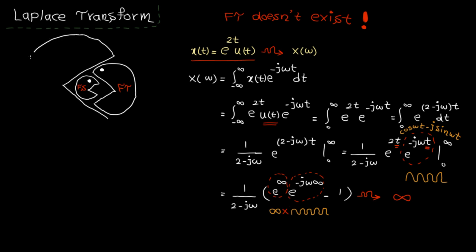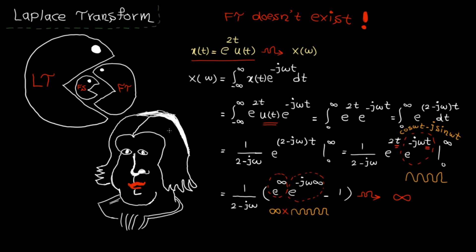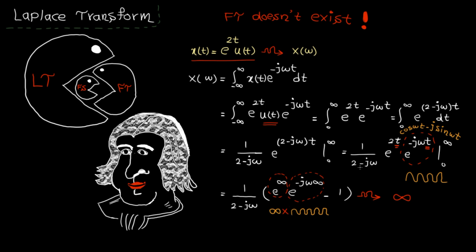So we need something bigger than Fourier transform. This huge monster is called the Laplace transform — the master of all transforms. Laplace is remembered as one of the greatest scientists of all time, a great mathematician and astronomer sometimes referred to as the Newton of France. His name is actually engraved on the Eiffel Tower. Laplace transform appears almost everywhere, from classical mechanics to differential equations and, most importantly, control theory — it forms the foundation of control theory.